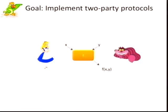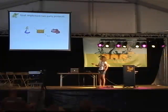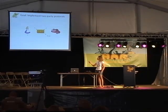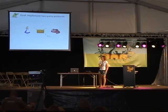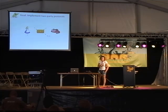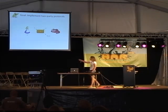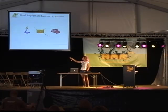We want to implement two-party protocols between two parties, Alice and Bob. All the problems that I will be considering are of the following form. Alice and Bob have agreed on some function — this function is known to both of them. Alice herself has some input x, which is unknown to Bob. And Bob has some input y, which is unknown to Alice. At the end of the day, they want to compute the function f of x and y.